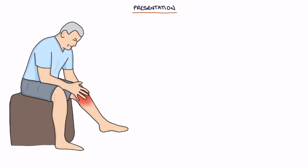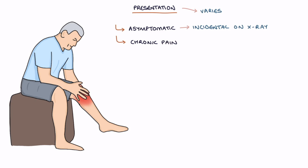The presentation of pseudogout varies. Many patients are asymptomatic and it's picked up incidentally on an x-ray. Others may present with chronic pain and stiffness in multiple joints.